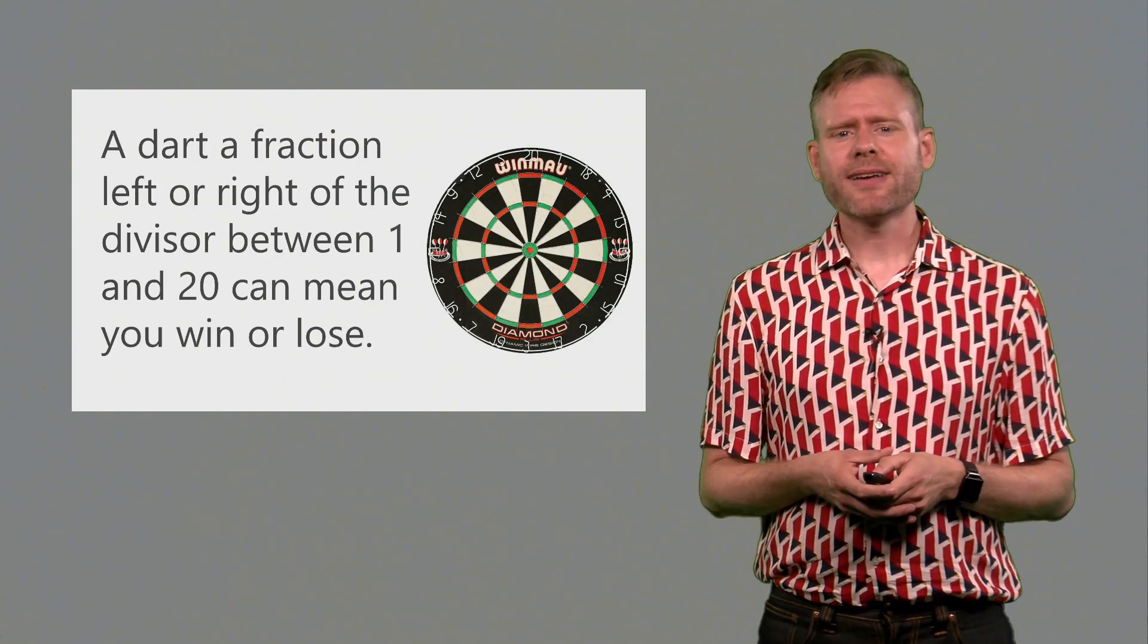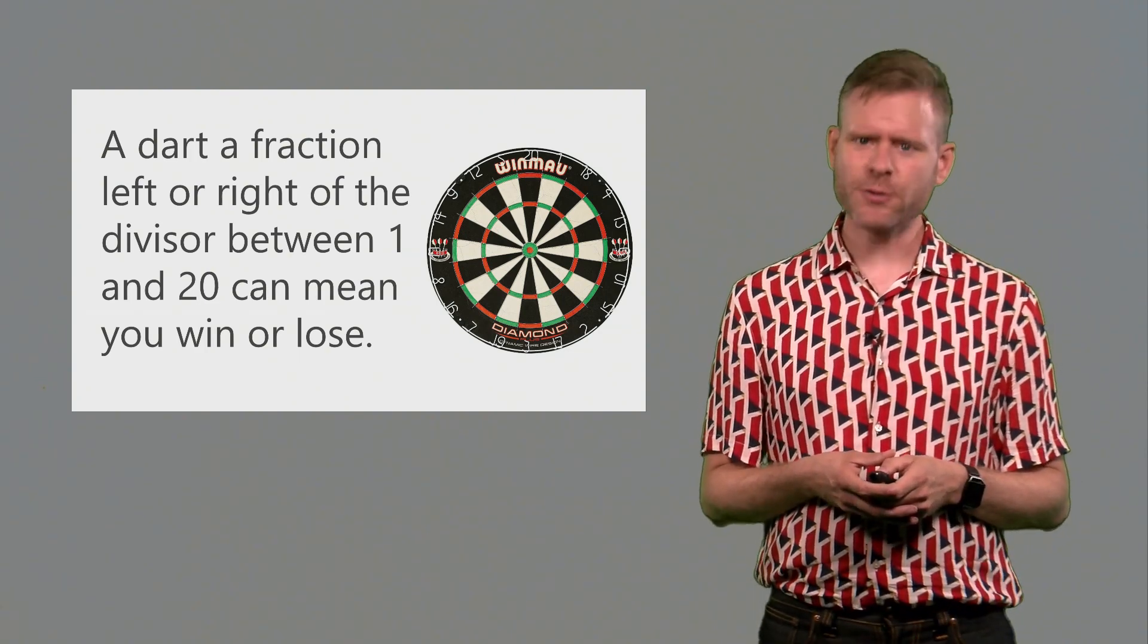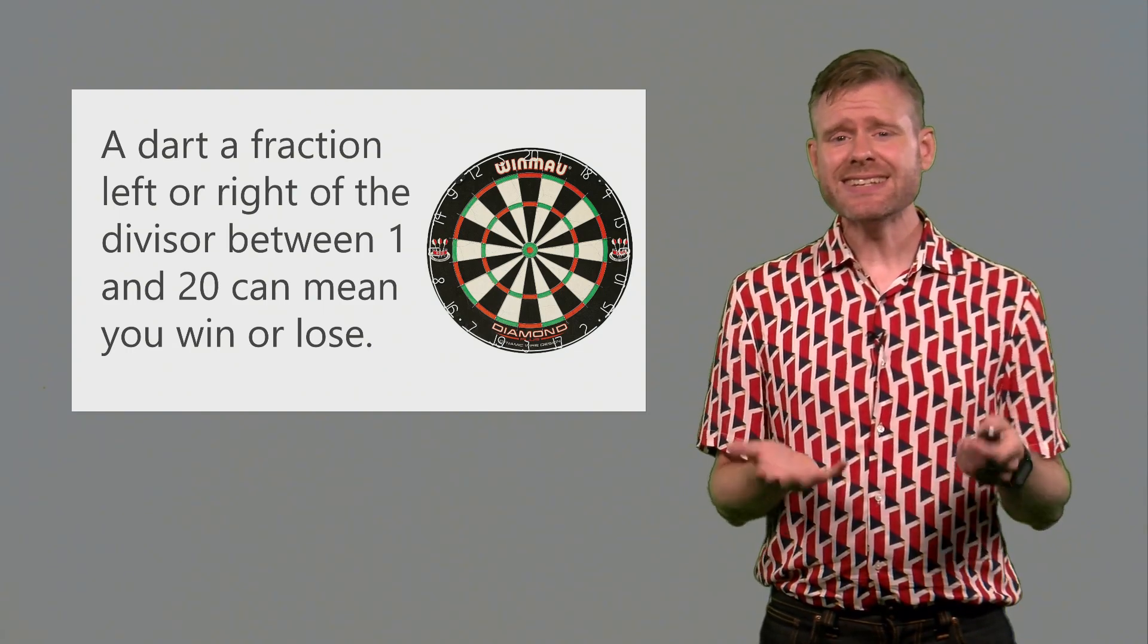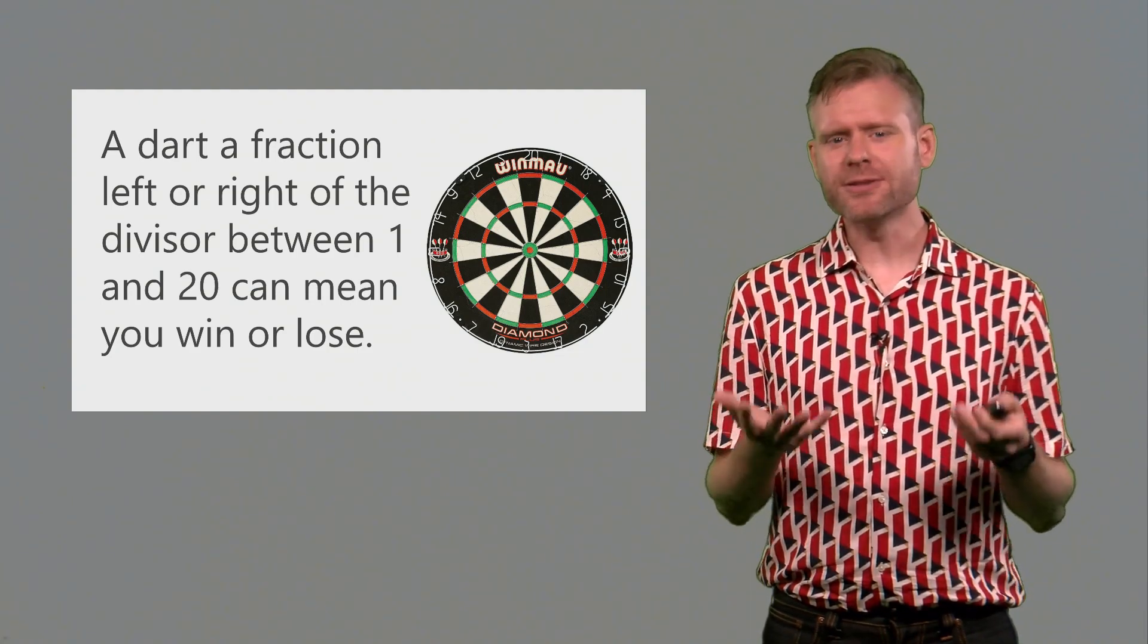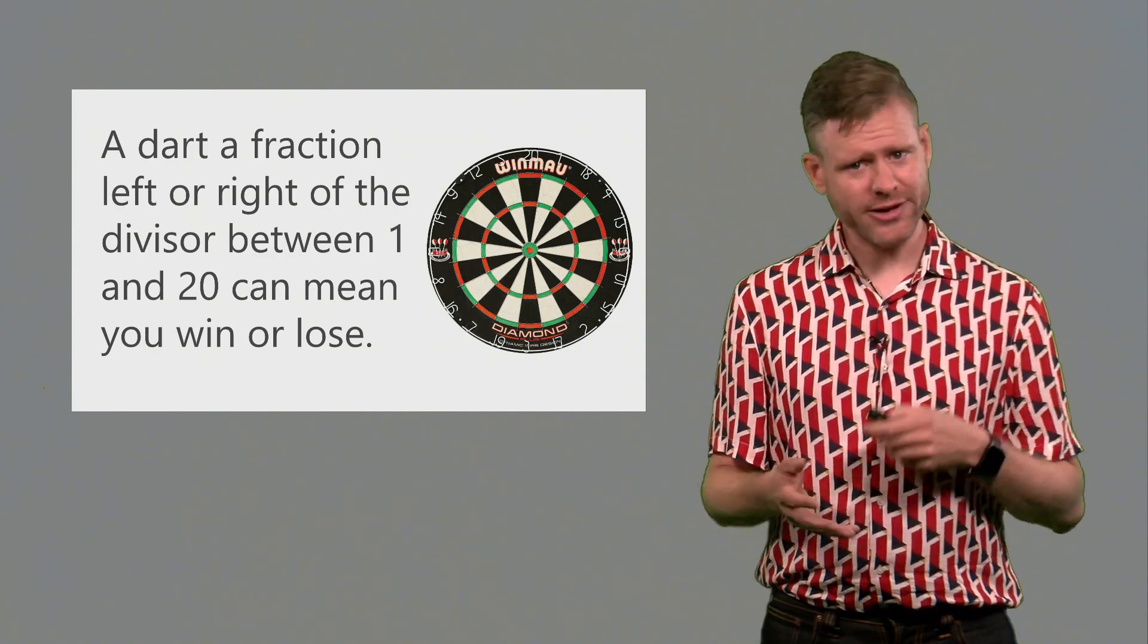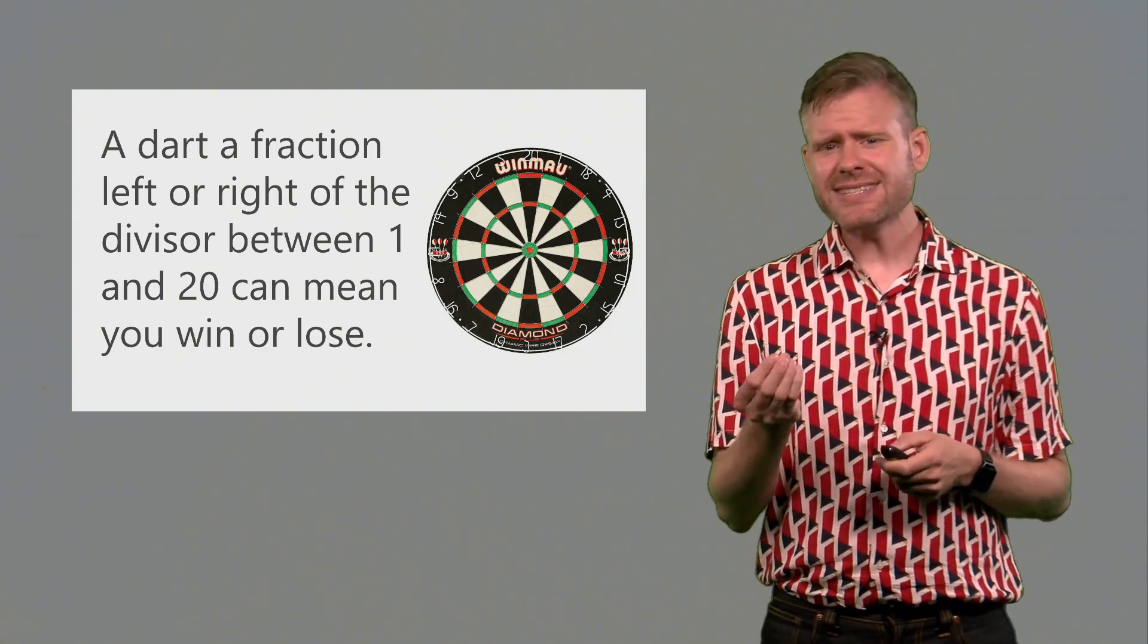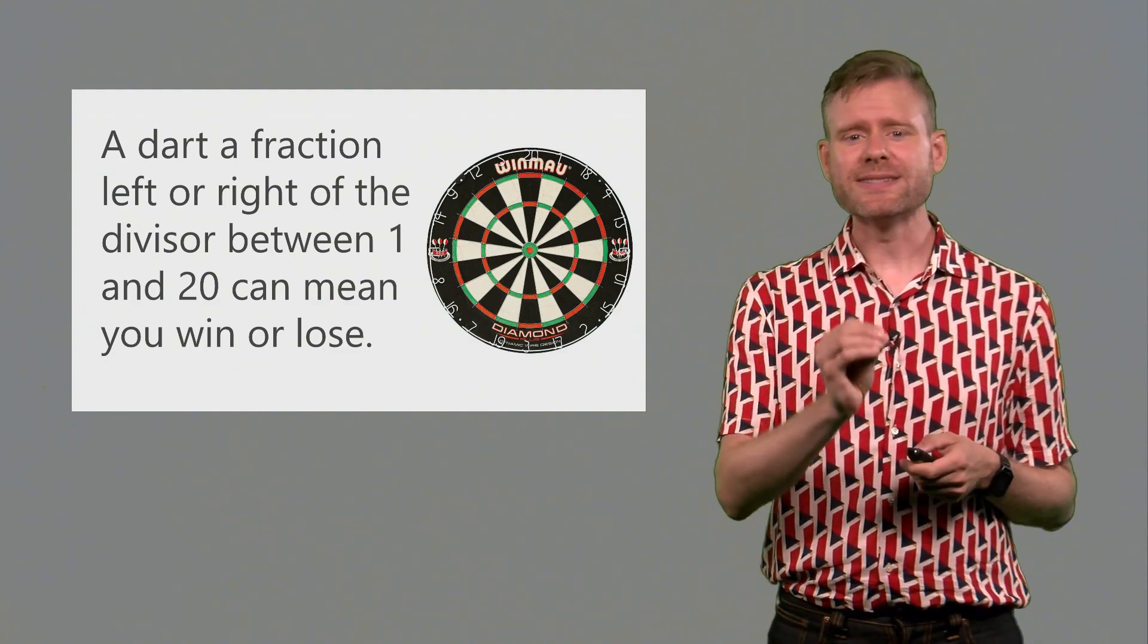If you throw a dart a fraction to the left or the right of the divisor between 1 and 20, this can in principle mean that one player might win or lose. This is the nature of a game. In essence a single dart could determine who wins. This is quite unlikely because most often there are so many different games that the better player wins out more often than the other player. But in essence this tiny difference could make the difference between who wins and loses.